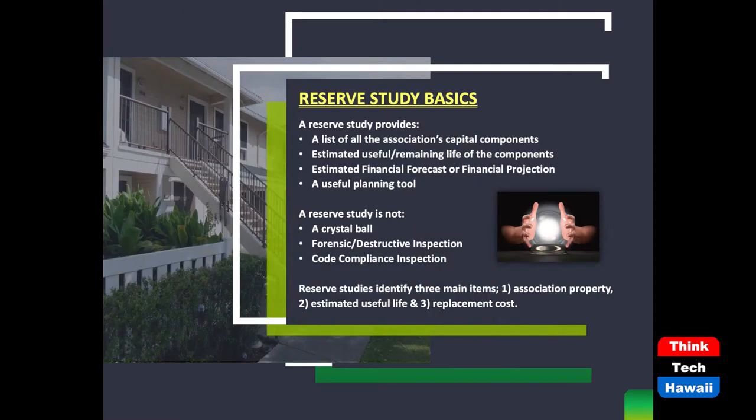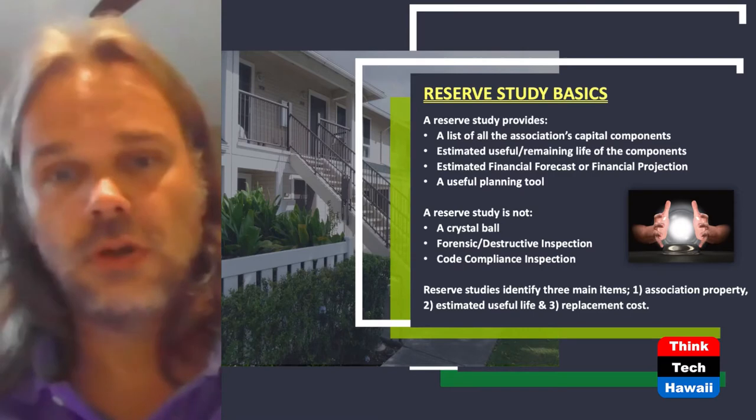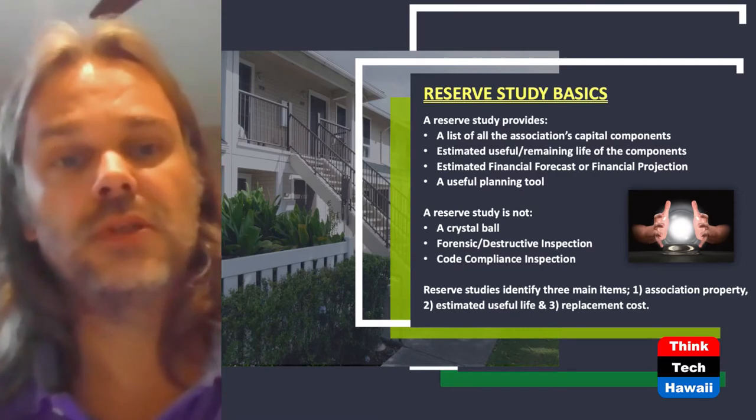When doing a reserve study, we are essentially answering three questions: What belongs to the association? What is the estimated useful life of that component? And what is the estimated replacement cost for that component? When a Level 1 reserve study is being performed, the reserve specialist will do a site visit from rooftop down to the lowest level of your structure, going through different closets, mechanical rooms, and electrical rooms, basically identifying all the common elements that belong to the association and should be included in the reserve study.